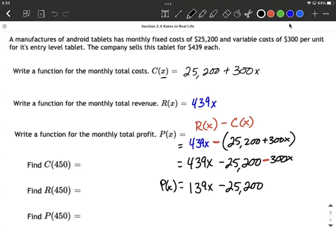Alright, from here, the rest of it really is hopefully pretty straightforward fill in the blank. Alright, evaluate the cost function at 450. So selling 450 tablets,